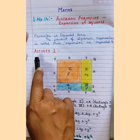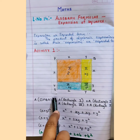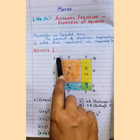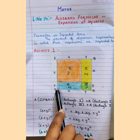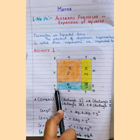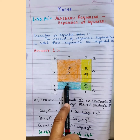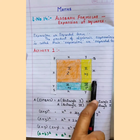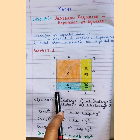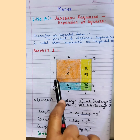Now let us consider Activity 1. We will study the first algebraic formula with respect to this activity. Here there is a quadrilateral PQRS. This quadrilateral PQRS is divided into 4 rectangles: Rectangle 1, Rectangle 2, Rectangle 3, and Rectangle 4. The sides of the quadrilateral are named with the variables X and Y.